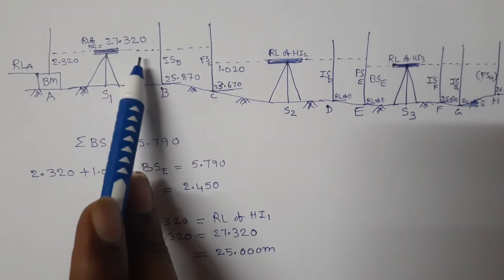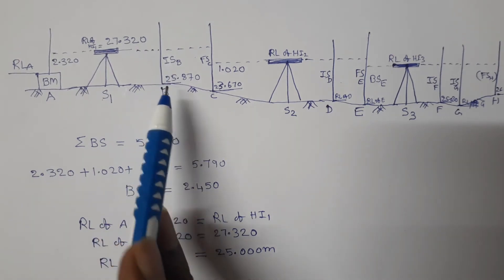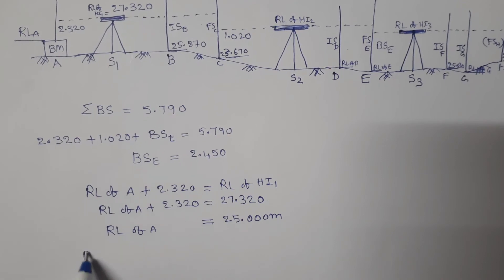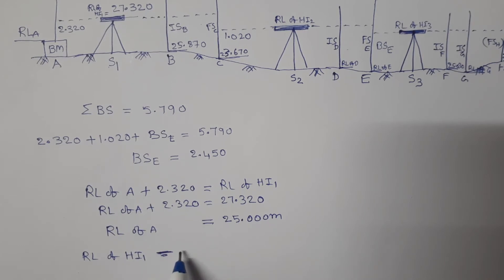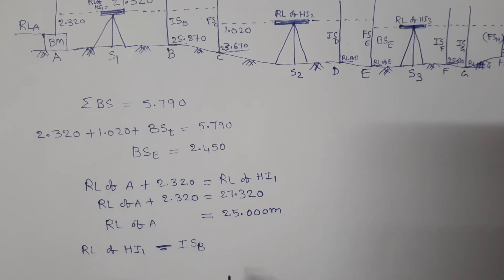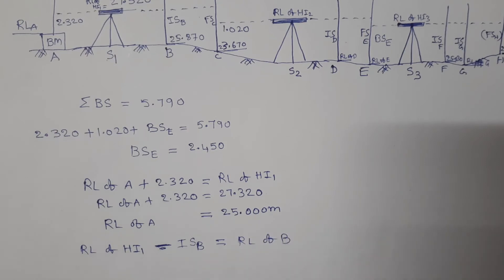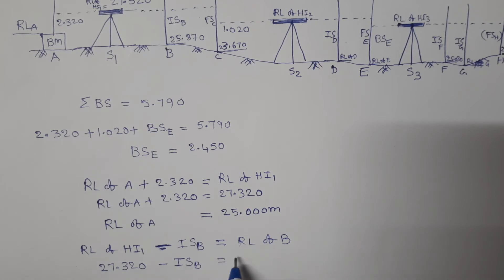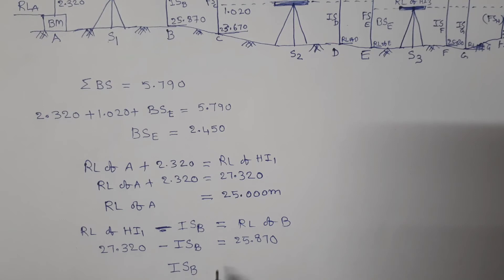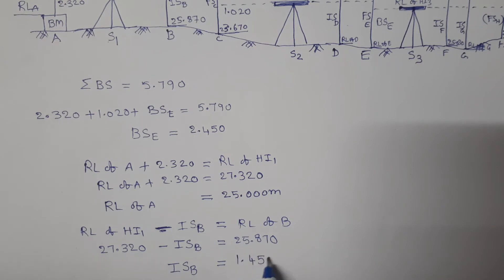RL of height of instrument 1 minus intermediate sight on B is equal to RL of B. RL of HI1 is 27.320 minus intermediate sight on B is equal to RL of B, which is 25.870. Therefore, intermediate sight on B is equal to 27.320 minus 25.870, which equals 1.450 meters.